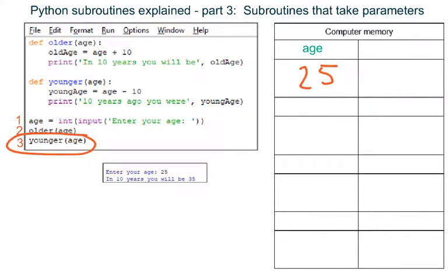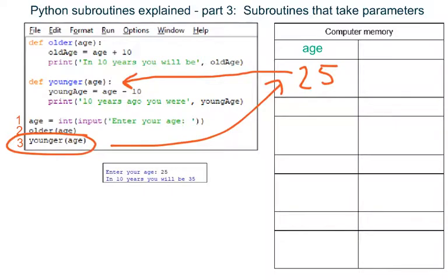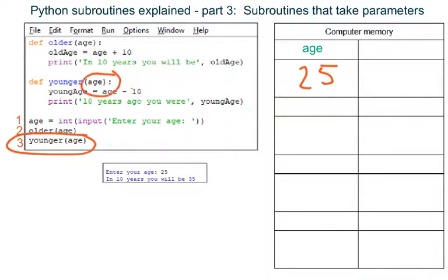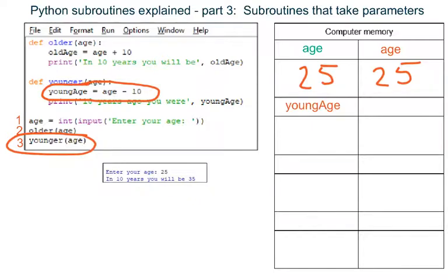The subroutine younger is called and a copy of the data inside variable age is sent to the subroutine, so Python jumps back up the program taking a copy of the data in variable age with it. Python creates a local variable named age to store this data in. A local variable named young_age is created, and the result of subtracting 10 from whatever is stored in local variable age is stored in this new local variable.